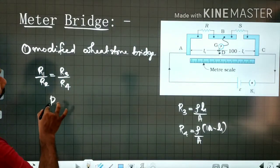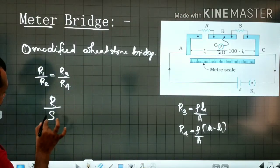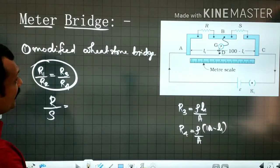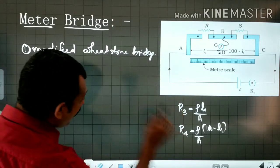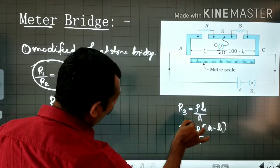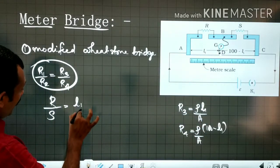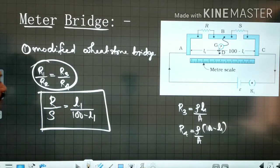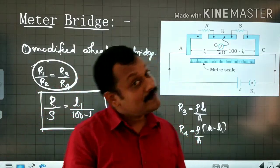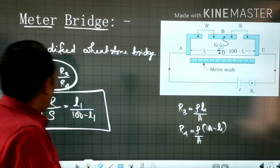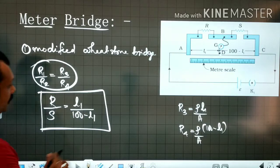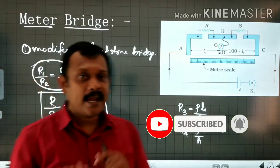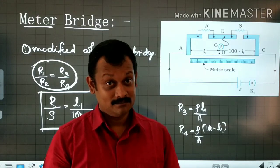Which means R1 is R and R2 is S here, taken from the standard terminology for the balanced condition. R divided by S is equal to R3 divided by R4. Since rho and A are common in R3 and R4, this gives L1 divided by (100 minus L1). So, R by S is equal to L1 divided by (100 minus L1). This is the condition for balancing in the case of a meter bridge. Hope you understand this discussion. Thank you.